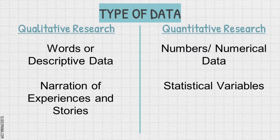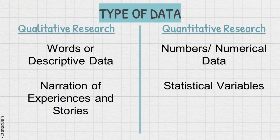On the other hand, quantitative research uses numerical data that can be measured, counted, and analyzed statistically. The data is more structured and objective, and often collected through surveys or tests. The goal of quantitative research is to quantify the problem by generating numerical data, or data that can be transformed into usable statistics. Examples of data in quantitative research are test scores, survey responses with numerical values, or measurements.